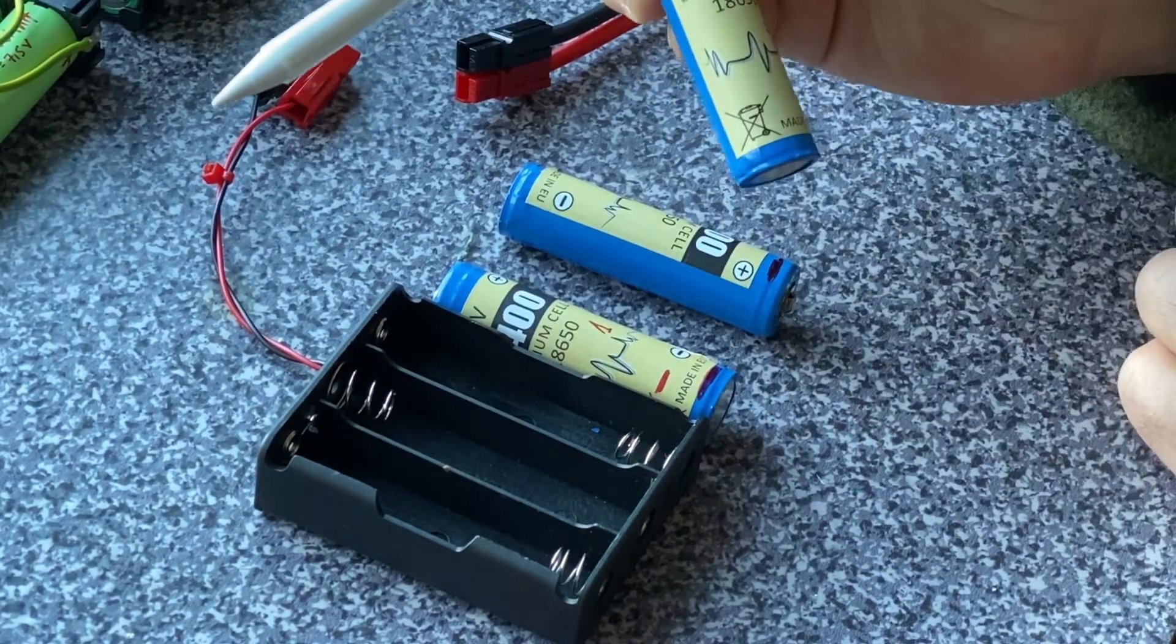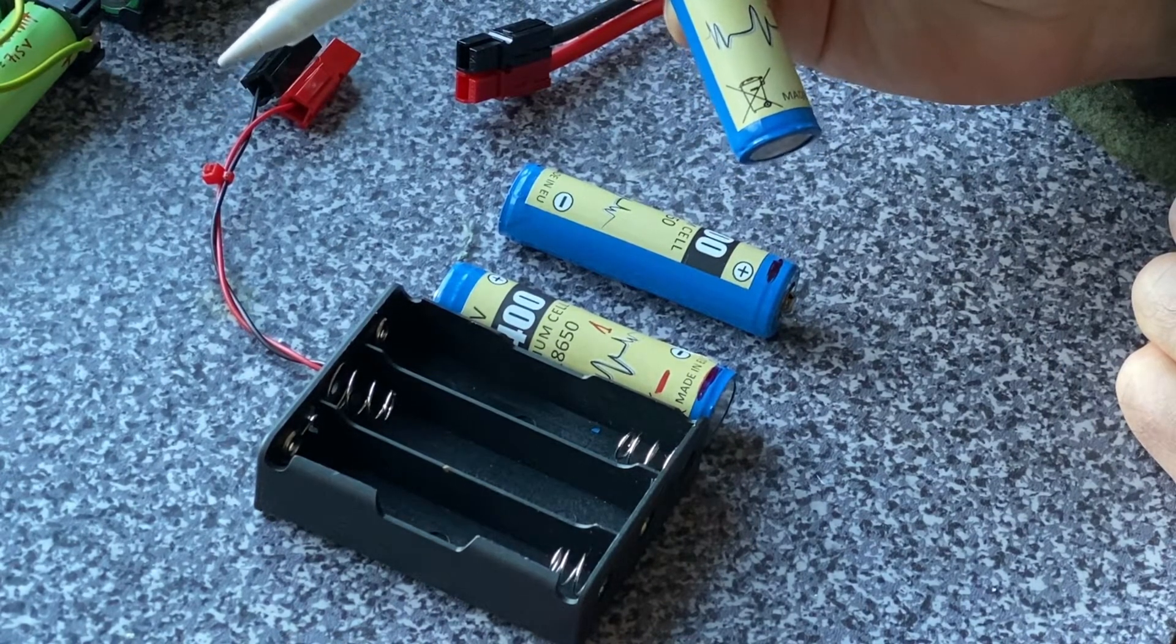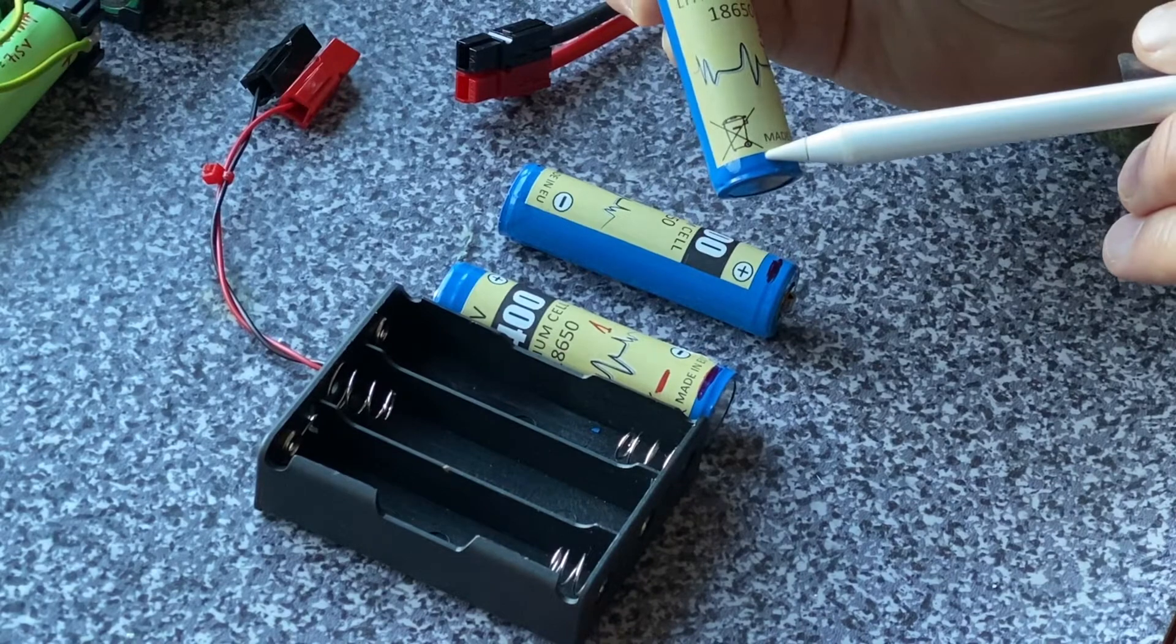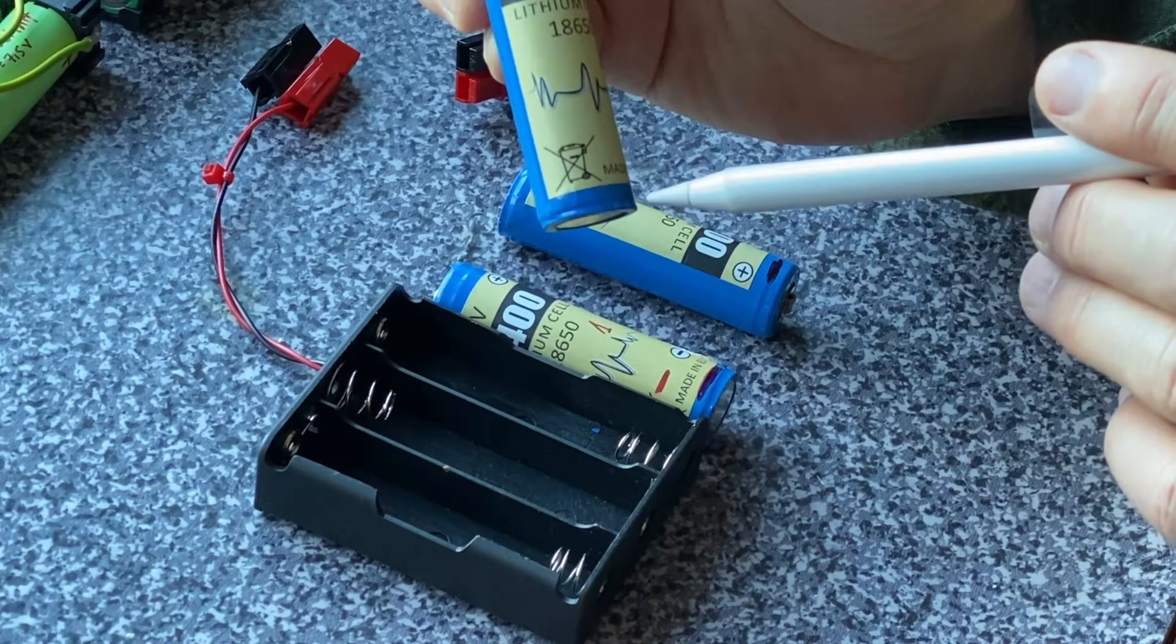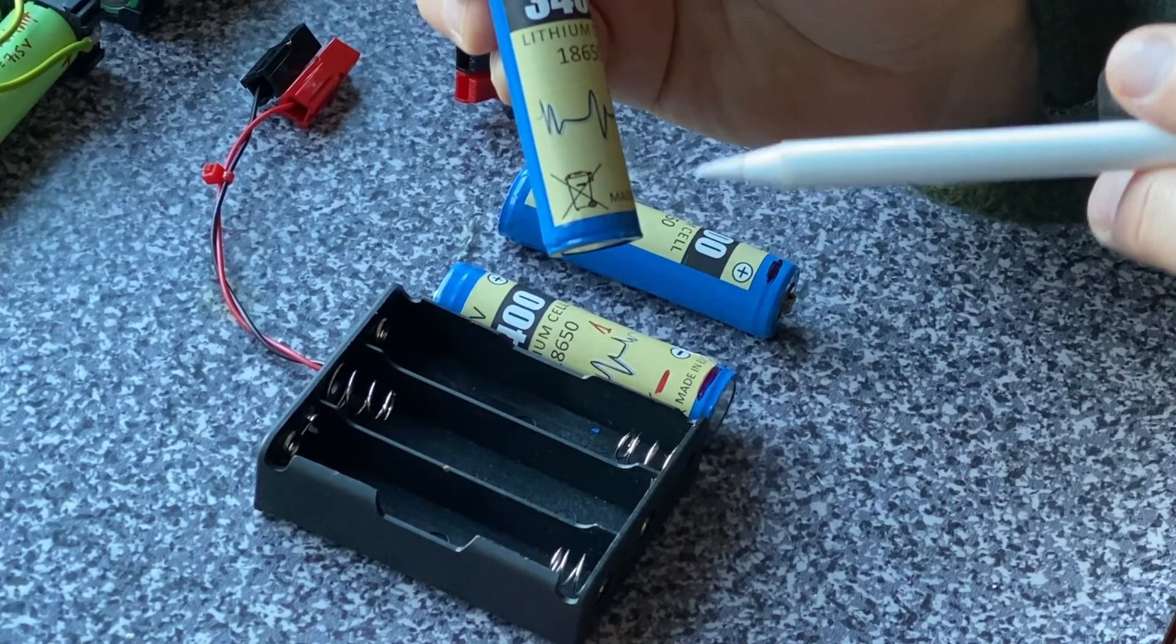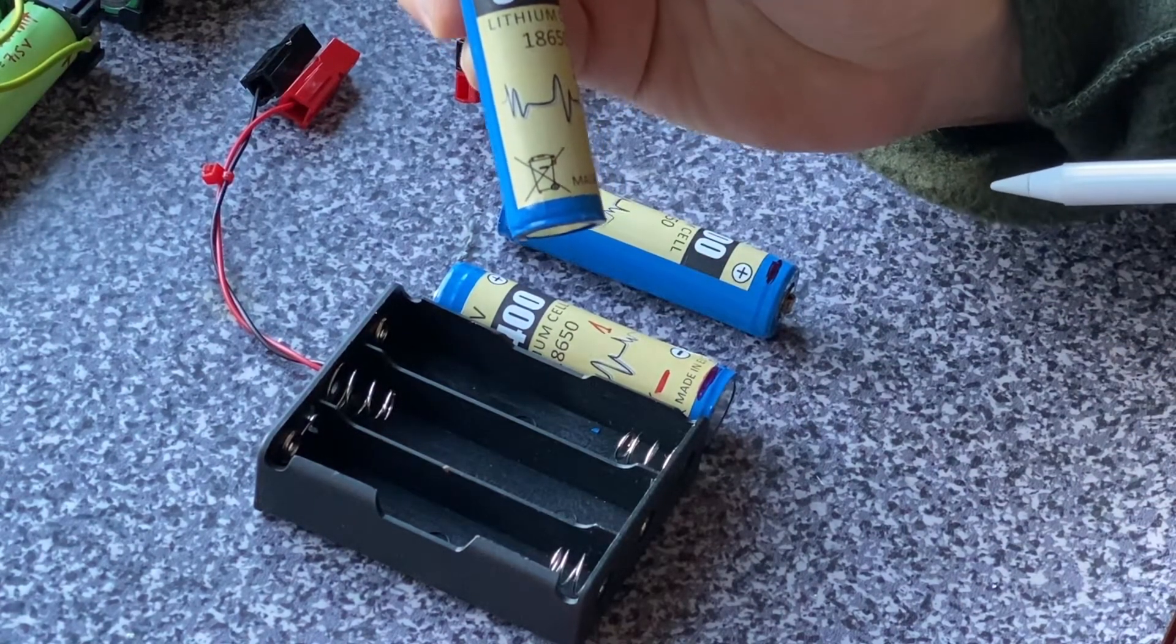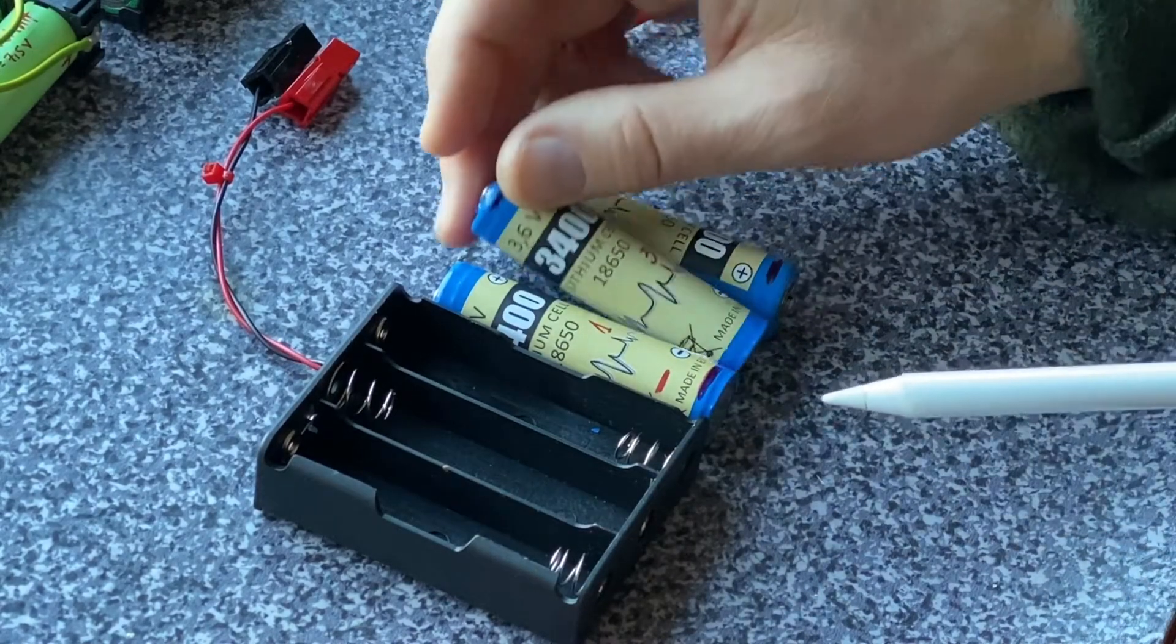This battery cell has the BMS PCB already included into the battery right down here in the bottom of the battery. So because of this the battery cell itself is a little bit longer than the regular battery cell lithium-ion battery cell without the BMS PCB included. So this is important when you choose the battery holder for the battery cells.